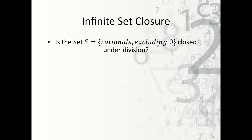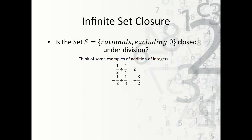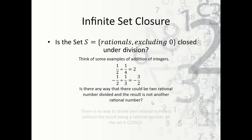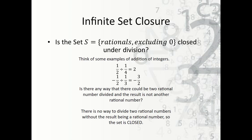What if we consider the set of rationals excluding zero — is it closed under division? Dividing rationals, such as 1/2 divided by 1/4 equals 2, or negative 1/2 divided by 1/3 — remember, it's just multiplying by the reciprocal. There is no way to divide two non-zero rationals and get something other than a rational. We excluded zero, so no division-by-zero issue. Therefore, the set of rationals excluding zero is closed under division.